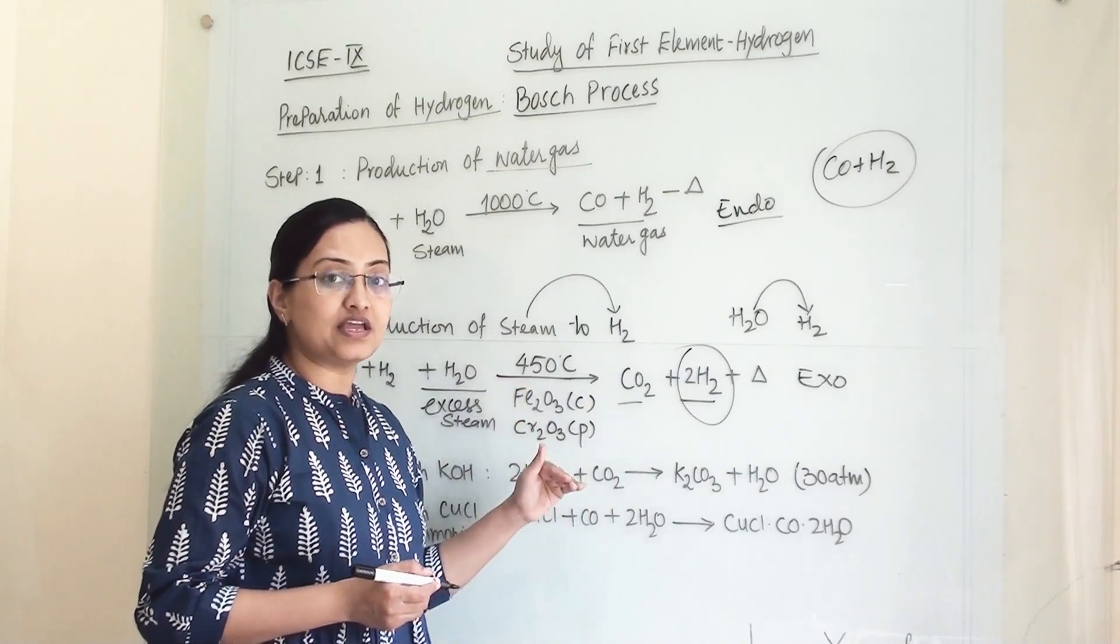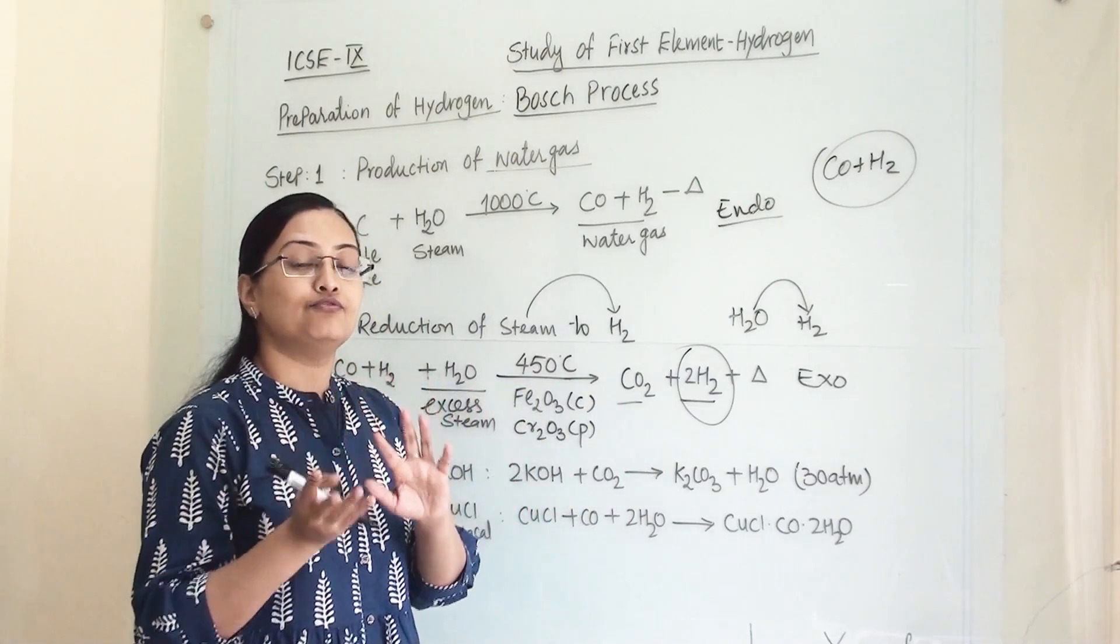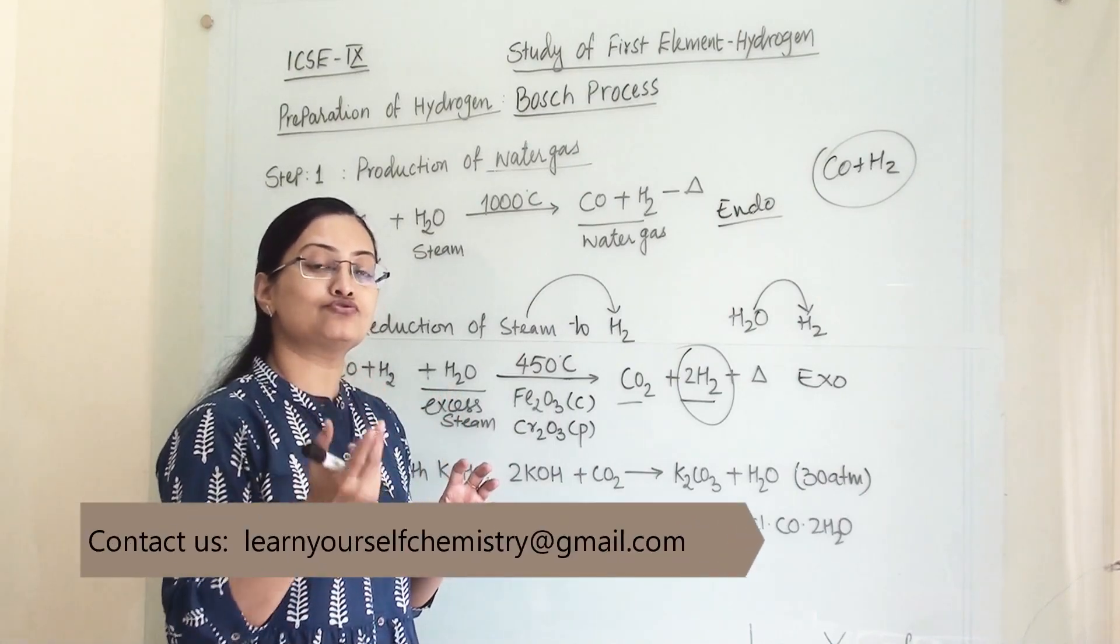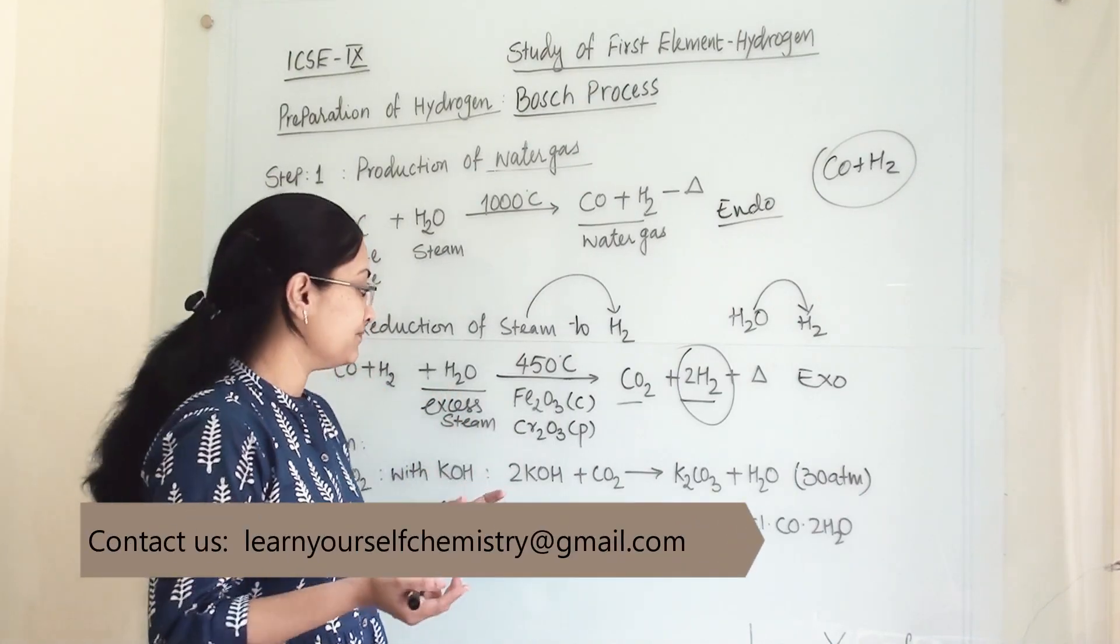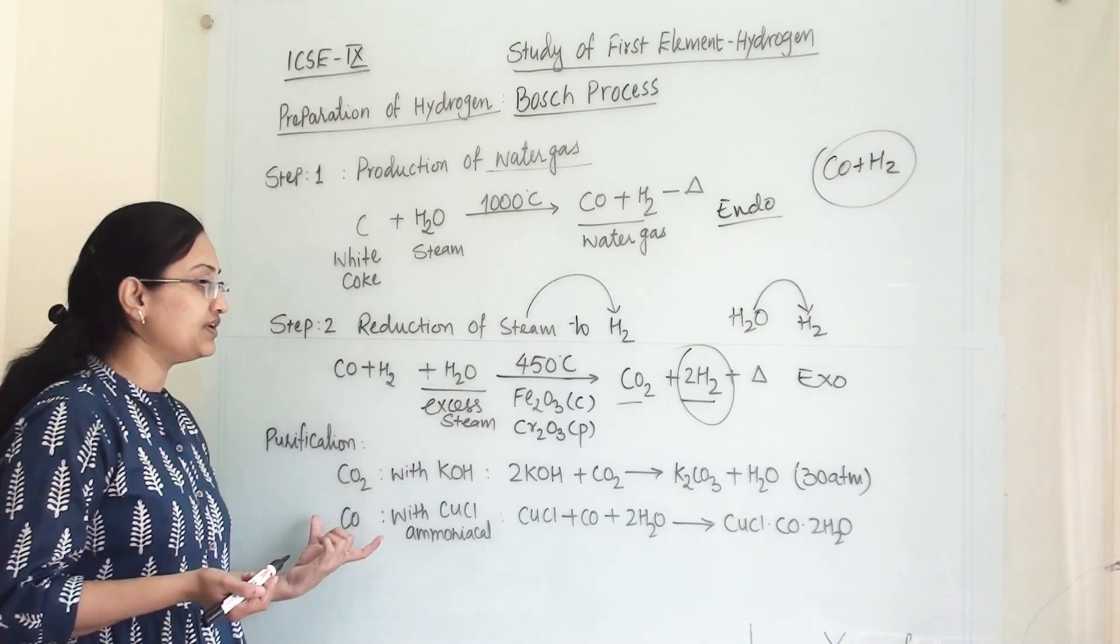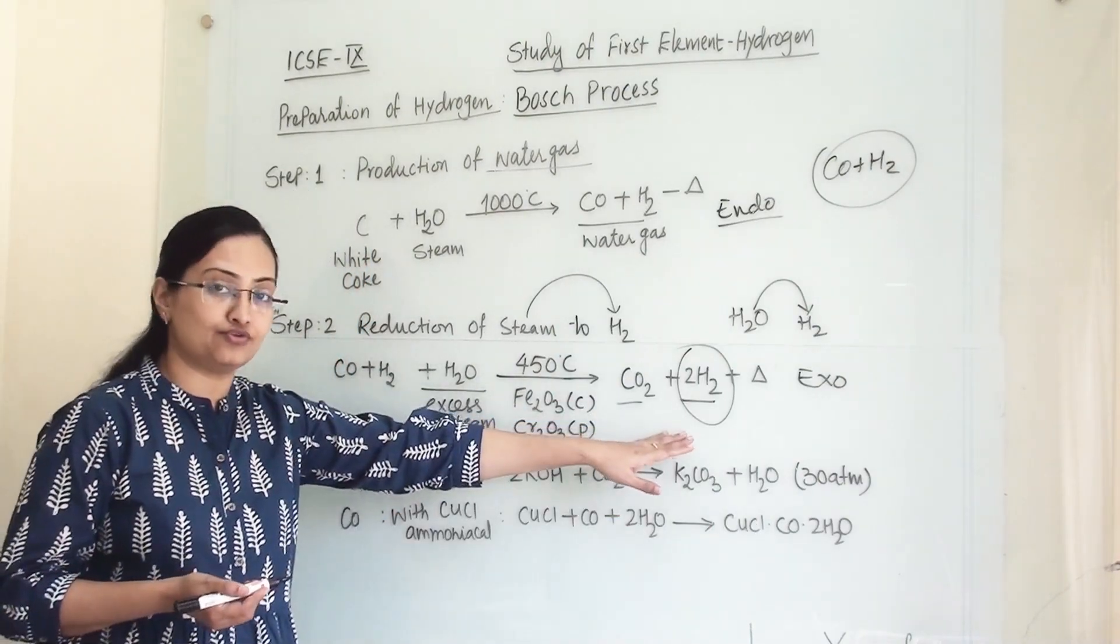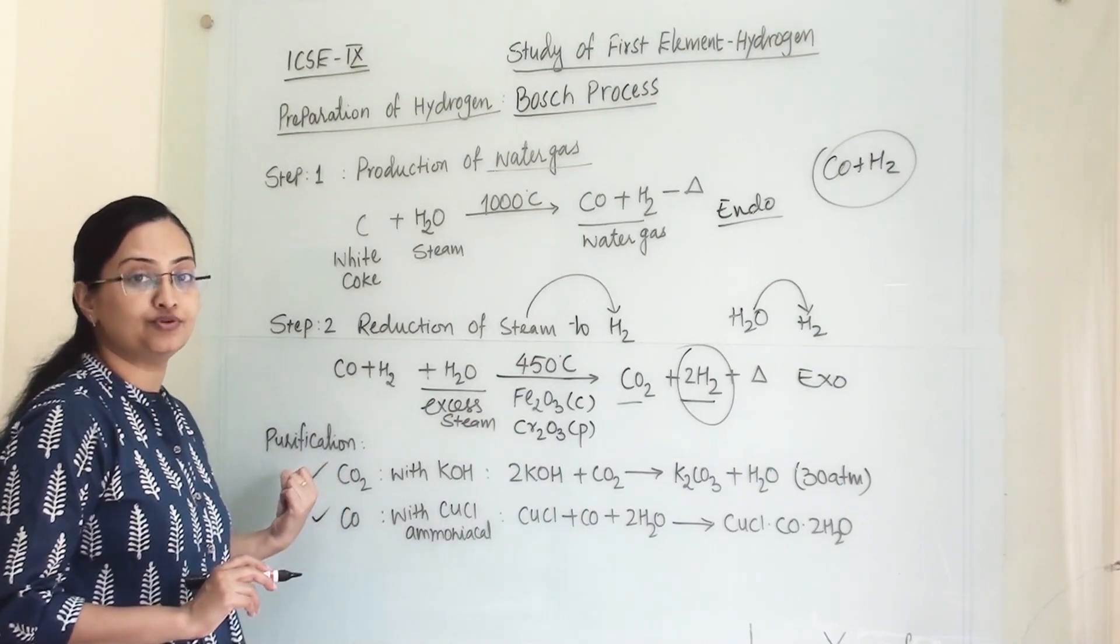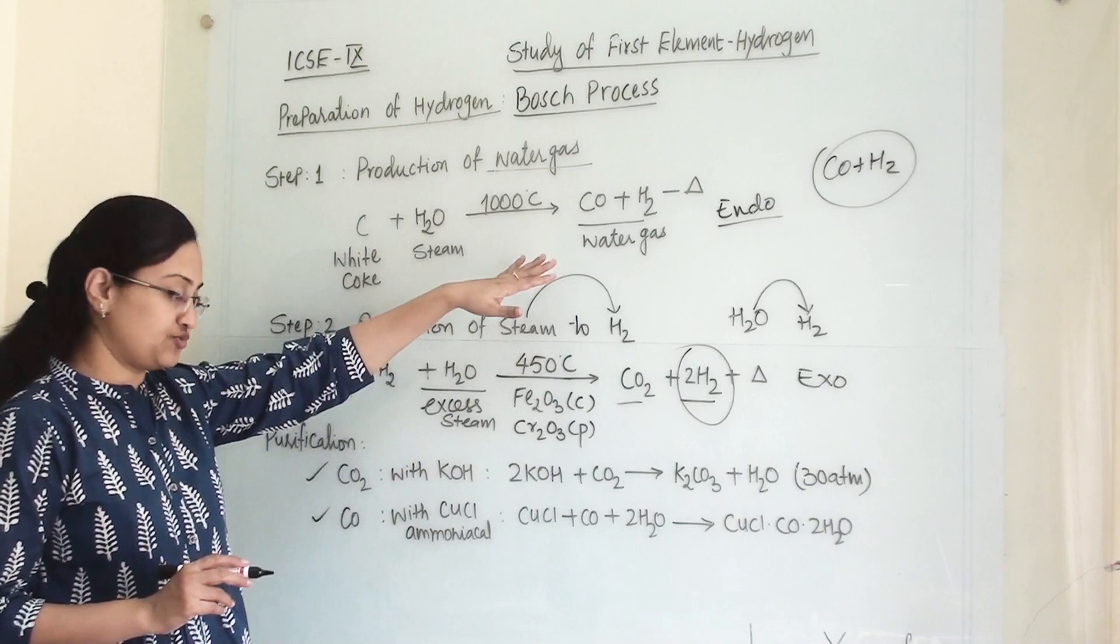Now in this reaction, some of the carbon will form carbon dioxide and some traces will also form carbon monoxide. So when these two impurities come along with hydrogen, we need to perform two steps which are called purification steps for Bosch process.